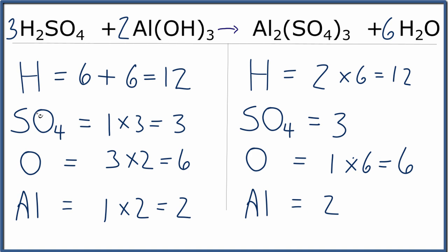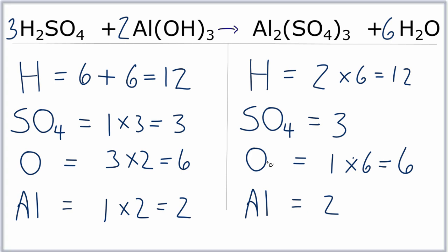This is Dr. B with the balanced equation for H2SO4 plus Al(OH)3 yields Al2(SO4)3 plus H2O. So thanks for watching.